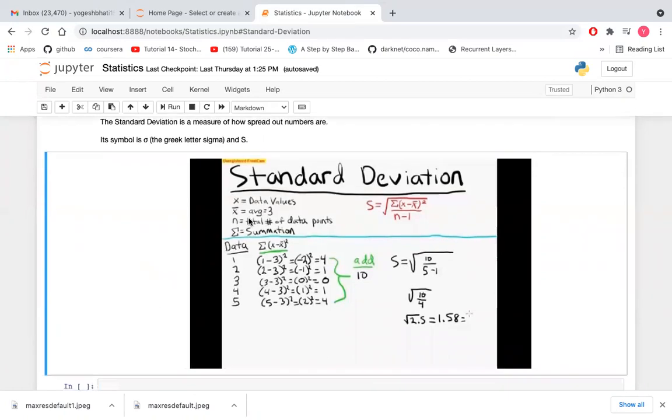Here I am giving data values: 1, 2, 3, 4, 5. First of all, I have to calculate the variance. For that: (1 minus 3) squared, (2 minus 3) squared, (3 minus 3) squared, x minus x-bar, and the summation of that particular thing divided by the total number of data points.